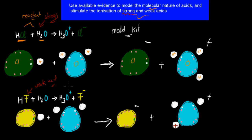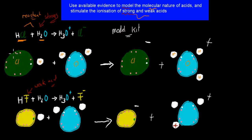You should realize that this here is the weak acid. We've done both. The dot point says: use available evidence to model the molecular nature of acids and simulate the ionization of strong and weak acids. You will be doing this with a molecular model kit. The molecular nature is the fact that you have these covalent bonds, and then later there are ions — you can show that by having electrons visible in the molecular model kit.